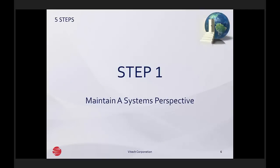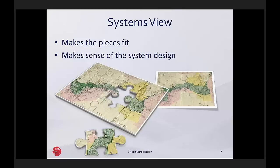Step number one: maintain a systems perspective. This is arguably the most important step among the five. We have to maintain a systems view because it makes the pieces of the system fit together in a logical, coherent way and makes sense of the system design. Without this view, the system design can't make any sense — the pieces very likely don't fit. When you're working a puzzle, it's very helpful to have the puzzle picture on the top of the box to use as you try to make the puzzle pieces fit together. In the same way, the systems view puts the individual pieces of the systems design into context.